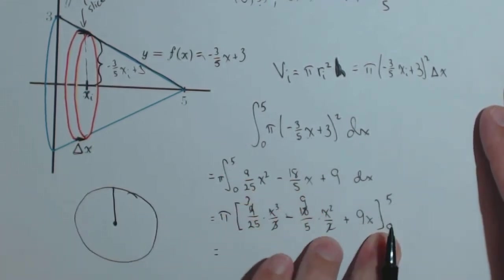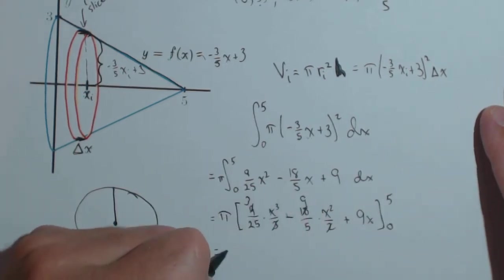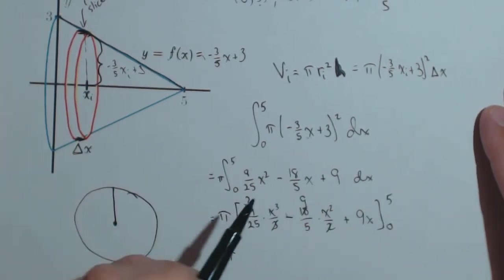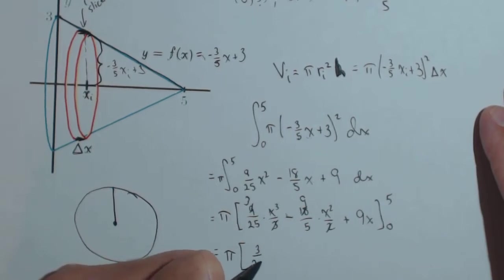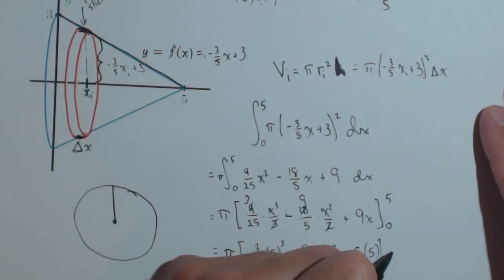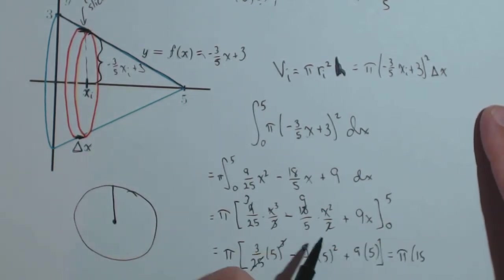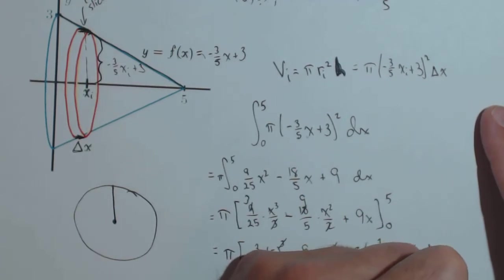Now I'll plug in my limits. In this case, I don't have to worry about plugging in the lower limit because it'll zero the whole thing out. But always make sure you check that. That's not automatic because it happens a lot with exponential functions. People forget that. Alright, so I have 3/25 times 5³ minus 9/5 times 5² plus 9 times 5. 5³, well this is 5², so 25 cancels out with all of those. I end up with 3 times 5, so fifteen. We can cancel one of these out with one of these, so minus forty-five plus forty-five. So we get just 15π.